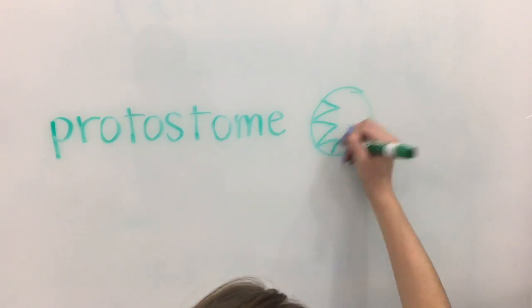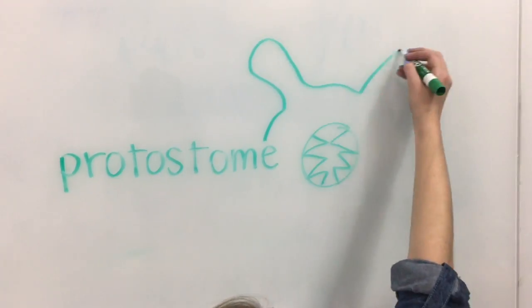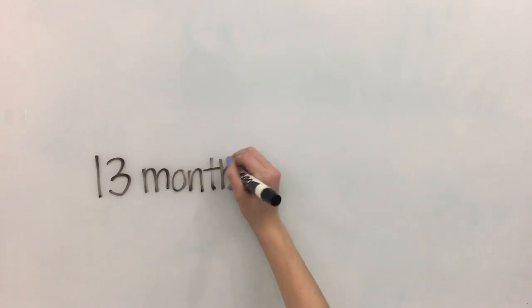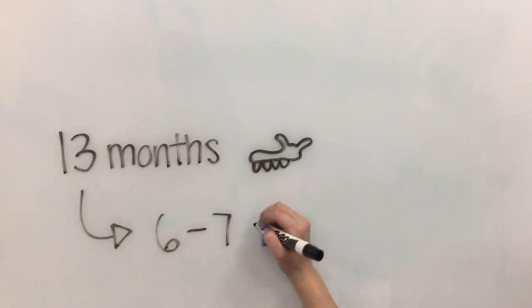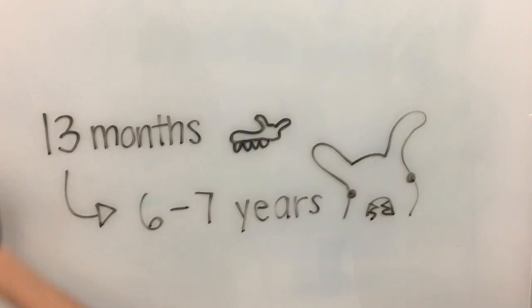Velvet worms are protostomes, meaning that the mouth develops first. Over 13 months, a baby worm grows, develops, and is eventually born. They will then live between 6 to 7 years.